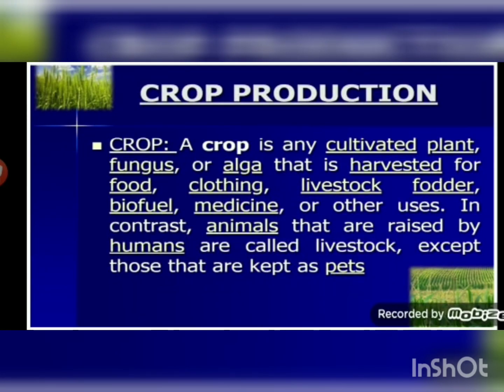A crop is any cultivated plant, fungus, or algae that is harvested for food, clothing, livestock fodder, biofuel, medicine, or other uses. Animals raised by humans are called livestock, except those kept as pets. Livestock are animals utilized by farmers for farm work — that is, for laborious work — or for the production of milk.